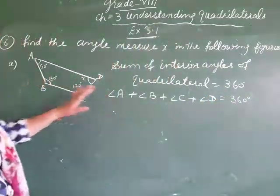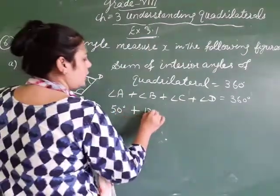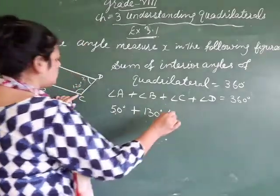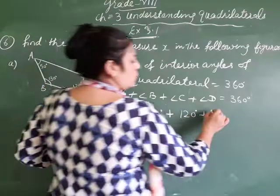So, what is the measure of angle A? Angle A is 50 degrees. Angle B is 130 degrees. Angle C is 120 degrees. Angle D is X. We have to find this.